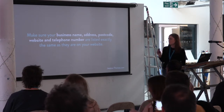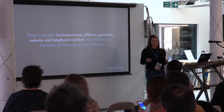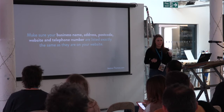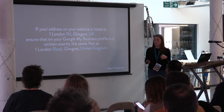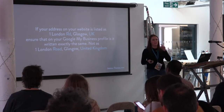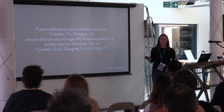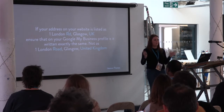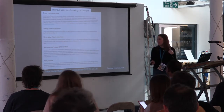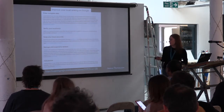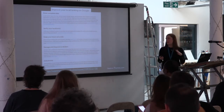Once you start setting this up, it's really important to make sure that your business name, address, website details, and phone number are written exactly the same as what they are on your website. For example, if on your website you've written 'Road' as 'RD', make sure it's written identically on your Google My Business page. The same applies to things like 'UK' versus 'United Kingdom' — make sure it's written exactly the same. This is really important because it's one of Google's local ranking factors, so make sure you get all of that data complete and up to date.